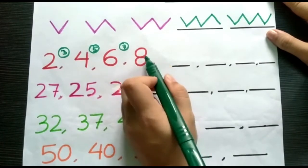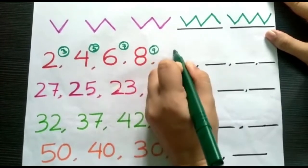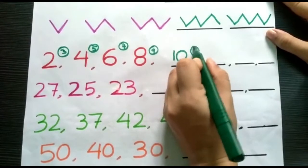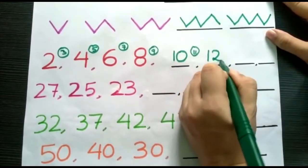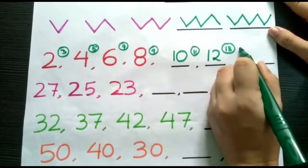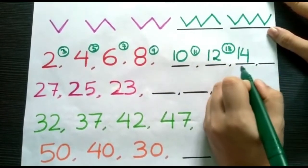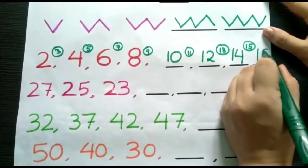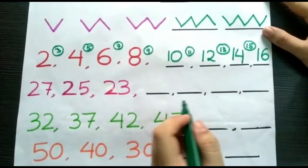After 8, 9 will be missing. So, next will be number 10. After 10, 11 will be missing number and we will write 12. After 12, 13 will be missing number. So, we will write 14. After 14, 15 will be missing number and next will be 16.